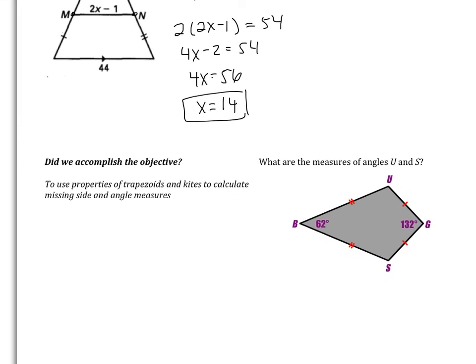In this video we covered trapezoids and kites — the properties of trapezoids and isosceles trapezoids, the properties of kites, and the trapezoid mid-segment. You have one extra problem to find the measures of angles U and S, which I'll check when you come to class tomorrow. There are a few more problems on the next page if you'd like to continue.